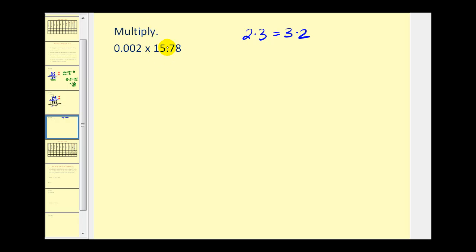What we'll notice on this problem, if we were to write 15.78 times 0.002, it'll be a lot cleaner if we multiply them in this order rather than the given order, and the product will be the same. So we'll multiply by 2.